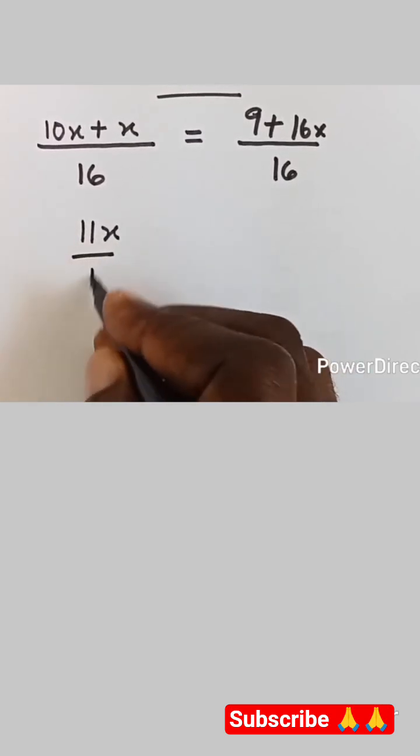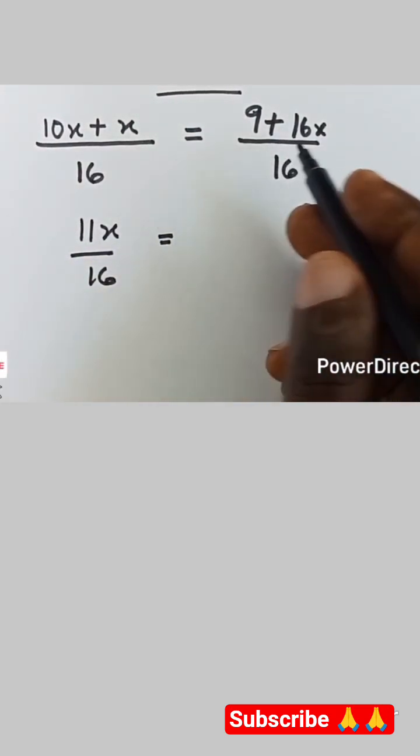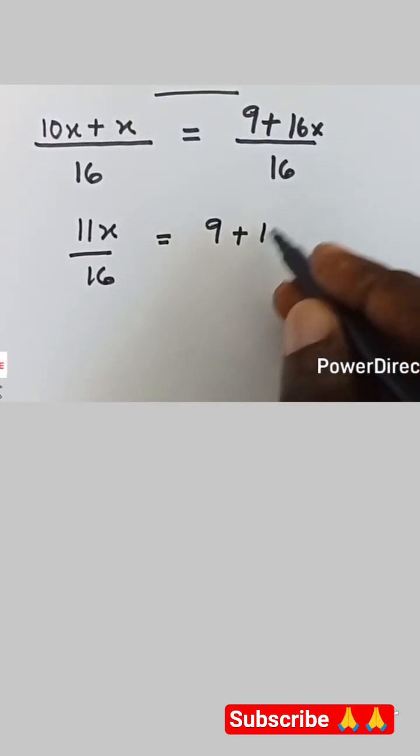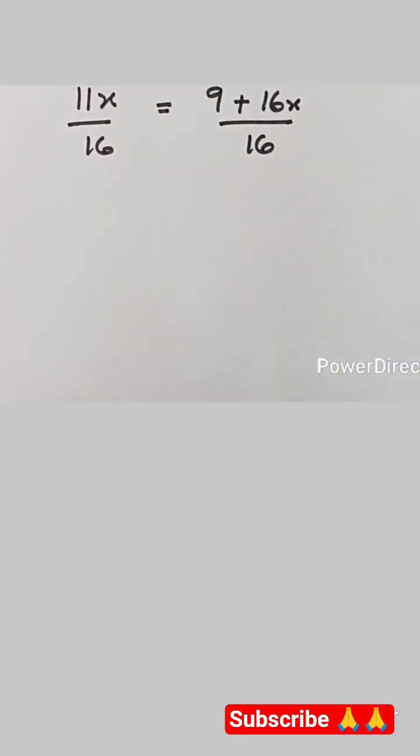So 10x plus x will give us 11x. We have 11x over 16 equals to 9 plus 16x. We're going to write it again: 9 plus 16x over 16.